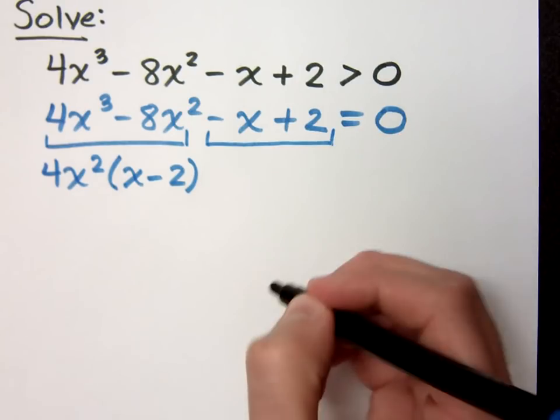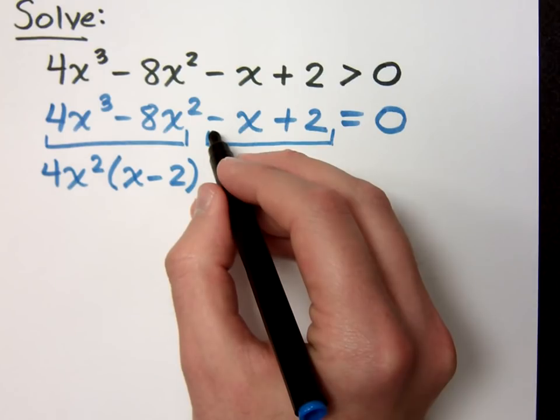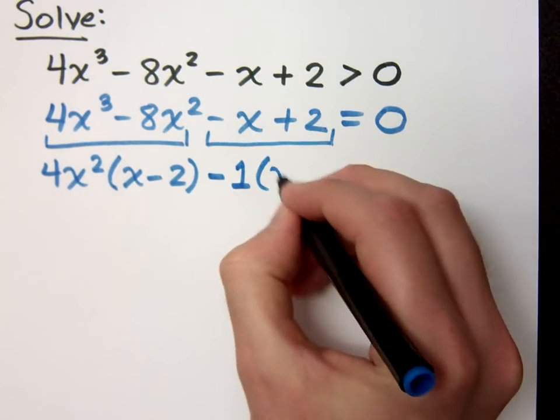In the second group, the common factor, well it doesn't look like there is anything, but remember, I'm anal and I don't like to lead off with a negative, so we factor out the negative one, and then what's left over is x minus 2.